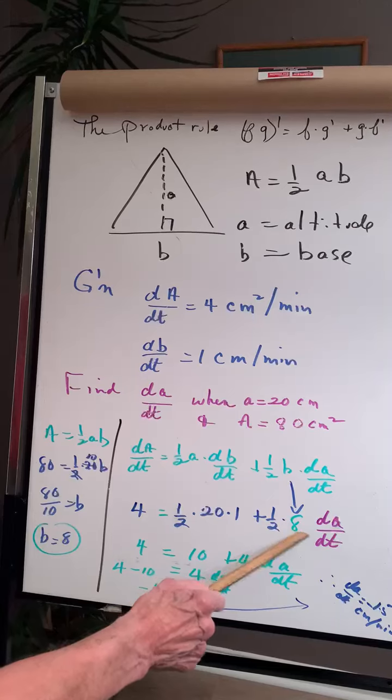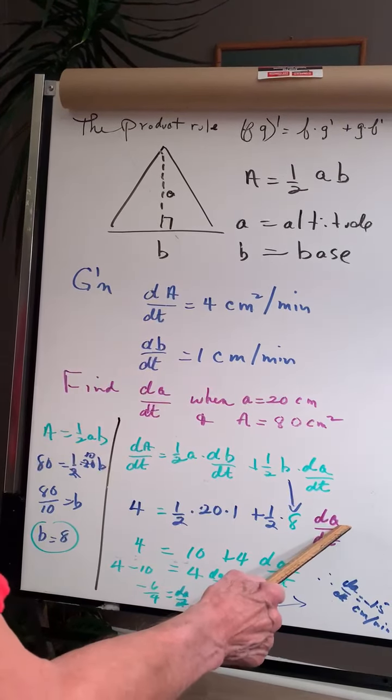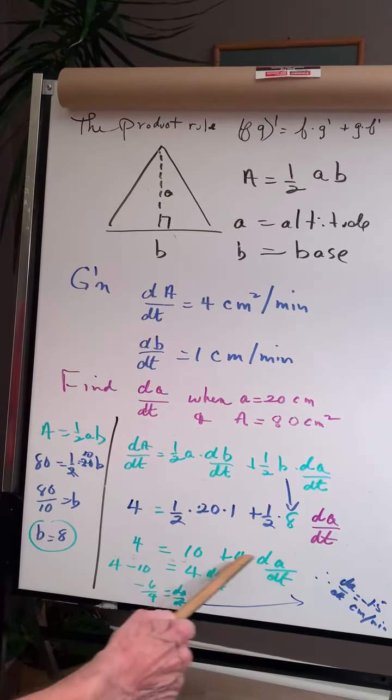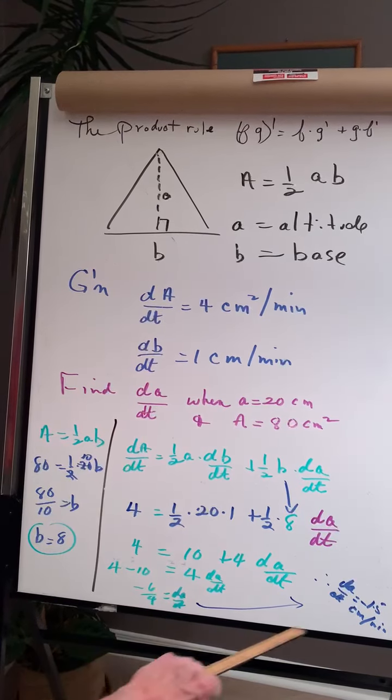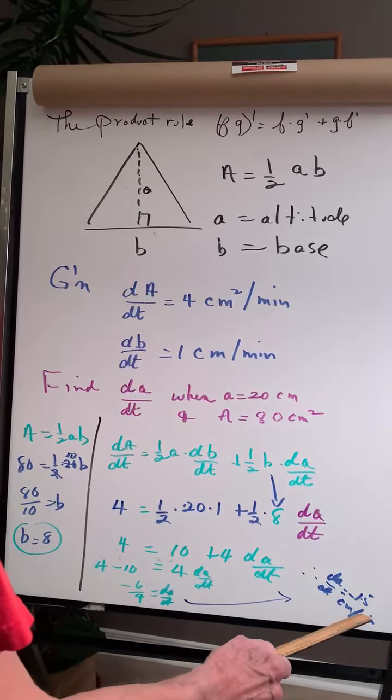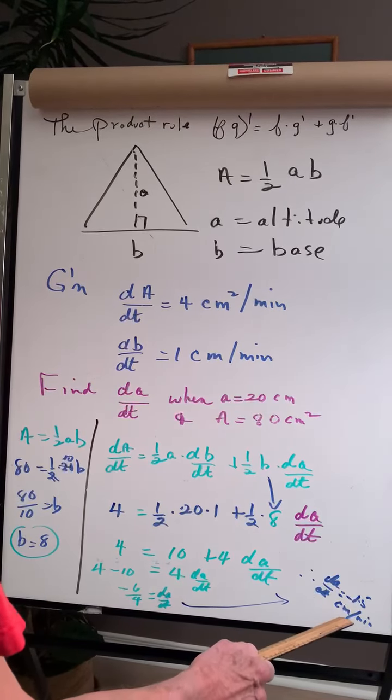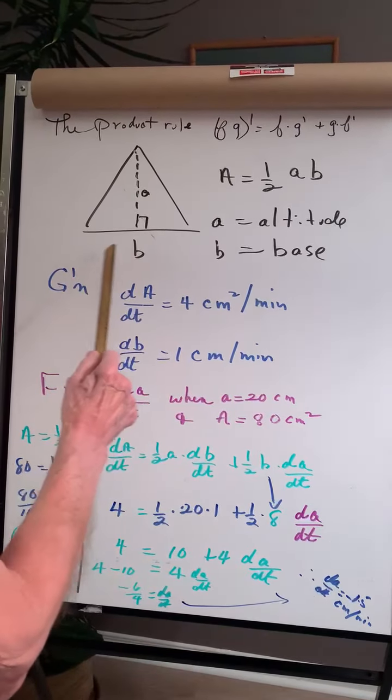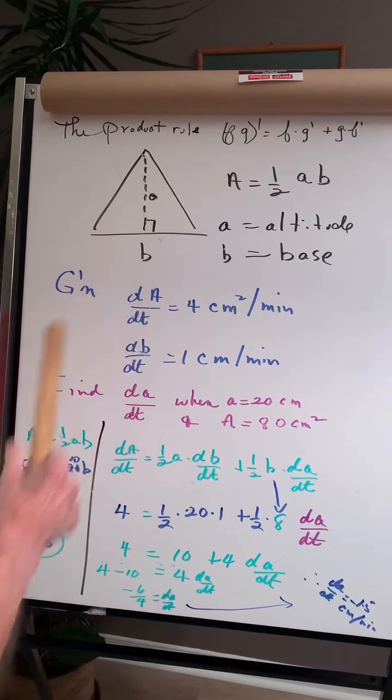Put back in the 8. Now we can find the change in the altitude. Simplify, and I'll end up with the change in the altitude decreases at 1.5 centimeters per minute. So as the base increases, the altitude is decreasing.